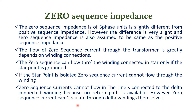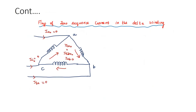However, zero sequence current can circulate through delta windings themselves. I am going to explain the flow of zero sequence current in the delta winding. The zero sequence current can flow through the delta winding internally but cannot flow outside.